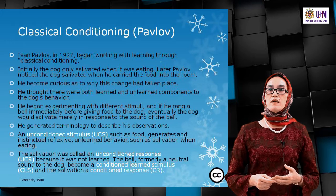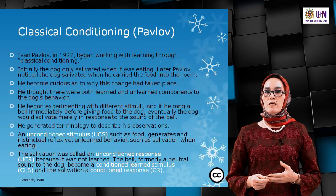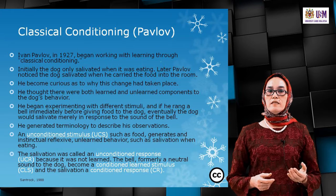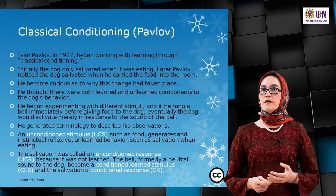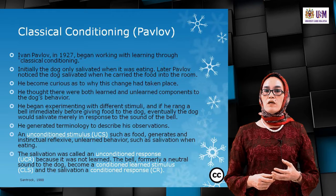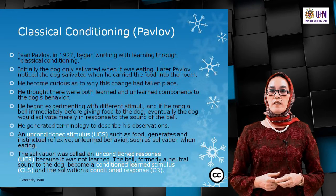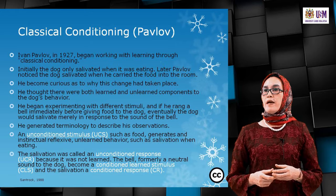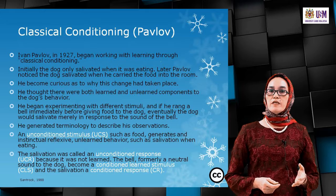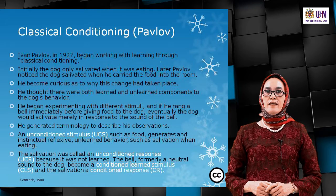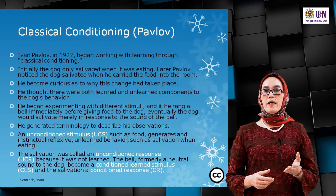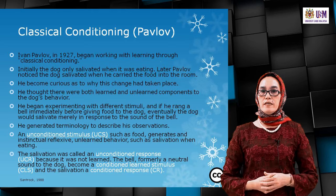Pavlov generated terminology to describe his observations. An unconditioned stimulus (UCS), such as food, generates an instinctual, reflexive, unlearned behaviour such as salivation — called the unconditioned response. The bell, formerly a neutral sound, became a conditioned stimulus, and the resulting salivation became the conditioned response. So the bell is the stimulus and the saliva is the response.